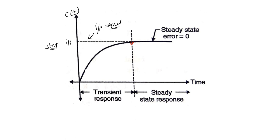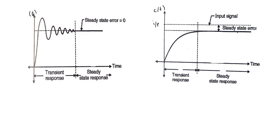Now I am going to explain steady state error. Here in this figure, which shows the graph between output and time, you can see the step input which is the desired output we want to obtain. After giving the step input, the system gives an actual response. There is some difference between the desired output and the actual output, and this difference is known as steady state error, denoted by ESS.